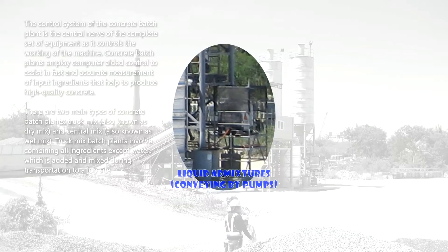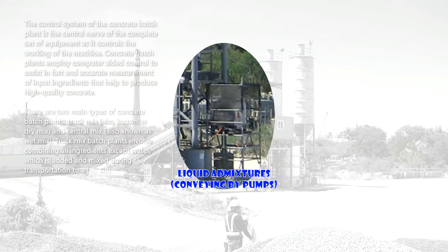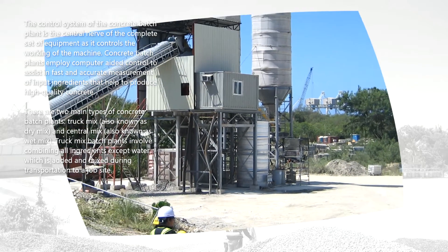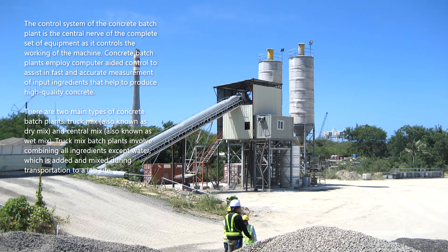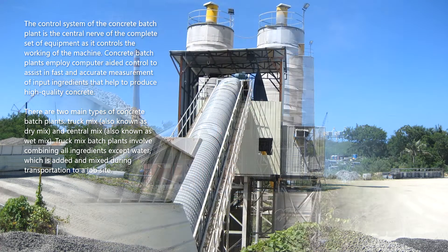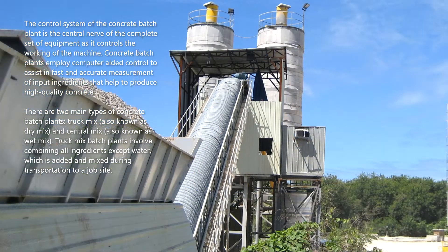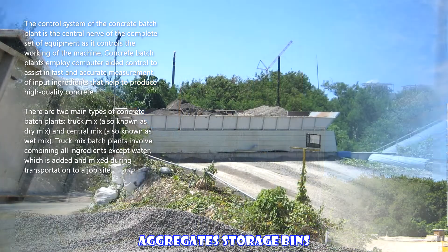The control system of the concrete batch plant is the central nerve of the complete set of equipment, as it controls the working of the machine. Concrete batch plants employ computer-aided control to assist in fast and accurate measurement of input ingredients, helping to produce high-quality concrete. There are two main types of concrete batch plants: truck mix, also known as dry mix, and central mix, also known as wet mix.